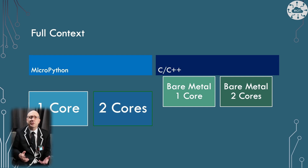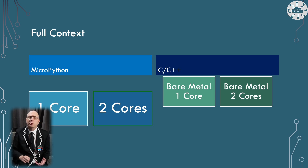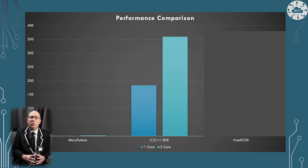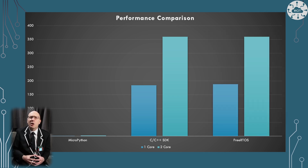I've previously done this experiment using C++ on the Pico under a bare metal SDK for one core and two cores, and also with FreeRTOS kernel which gives some multitasking capability. In C++ I can calculate the value of pi to a thousand significant figures 184 times in a minute on a single core, or 360 times on dual cores, with similar results under FreeRTOS.